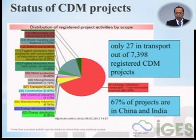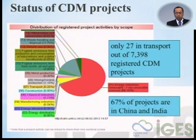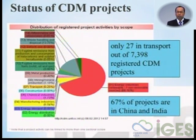The performance of CDM in the transportation sector is very low. As mentioned, in the pipeline we have around 50 projects among more than 7,000 registered CDM projects. Among those 50 in the pipeline, only 27 are registered as transport CDM projects, and most of them are located in China or India.